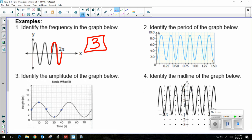Number two, identify the period of the graph below. Period is the interval it takes to complete one cycle in a periodic function. Here is one cycle before it starts to repeat. That cycle is occurring at 0.25, so my period is 0.25.